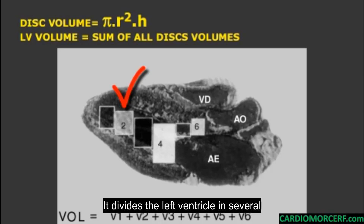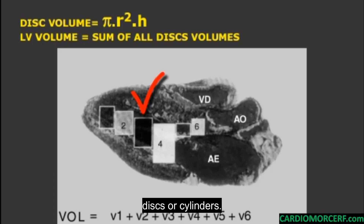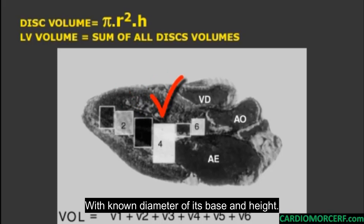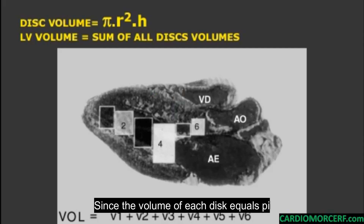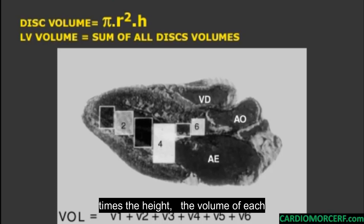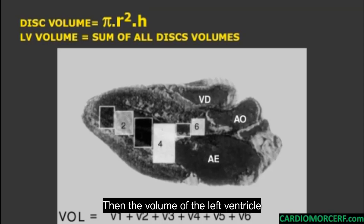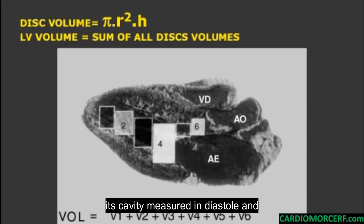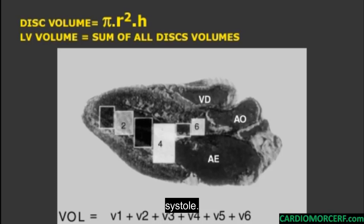How does it work? It divides the left ventricle into several disks of cylinder with known diameter of its base and height. Since the volume of each disk equals pi times the square radius of the base times the height, the volume of each cylinder will be known. Then the volume of the left ventricle equals the sum of all the cylinders inside its cavity, measured in diastole and systole.